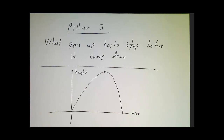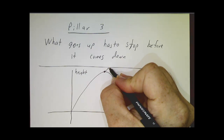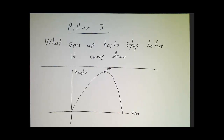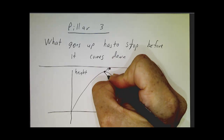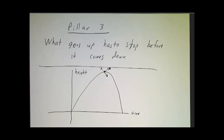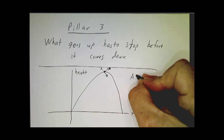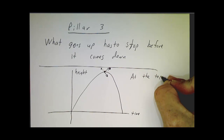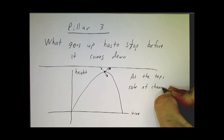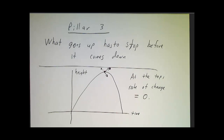Well, if it were rising at a positive rate — if it were heading up — then an instant later it would have been higher. That doesn't make sense because it's the top. So at the top, the rate of change is 0. It can't be positive and it can't be negative, so it's got to be 0.